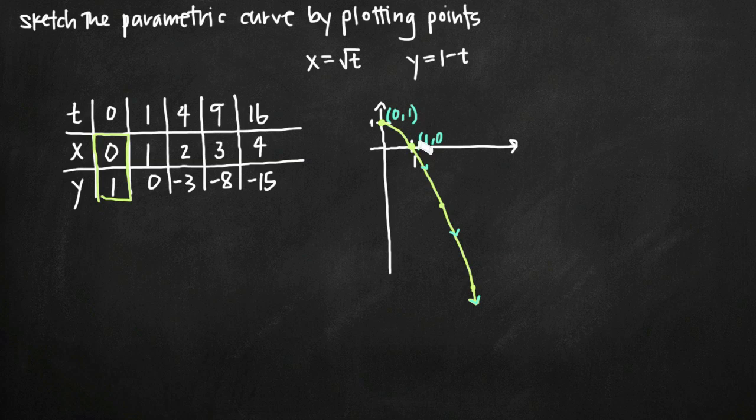Because remember, with parametric equations, we have the value of t moving in a specific direction. So because t increases in this direction, right, t increases from 0 to 1, then all the way to 16, it follows this direction here, so we show the direction of t.